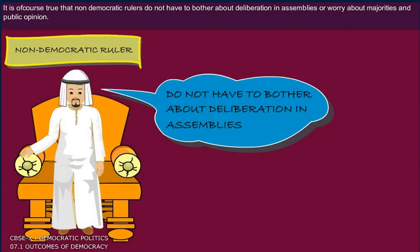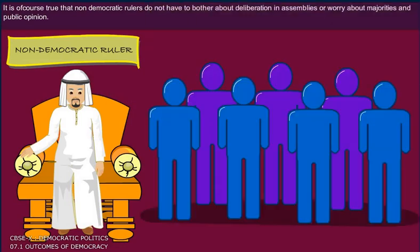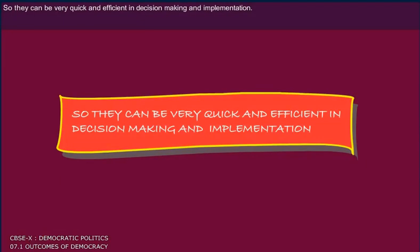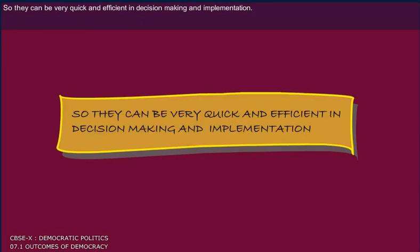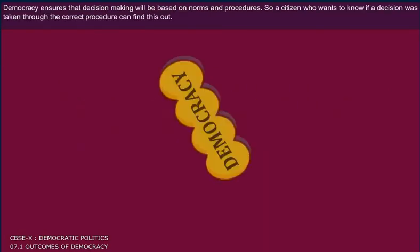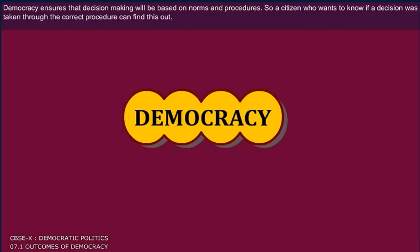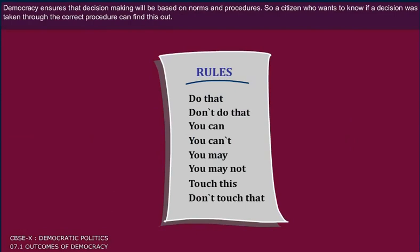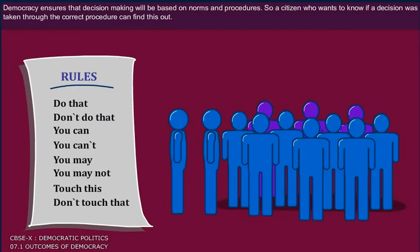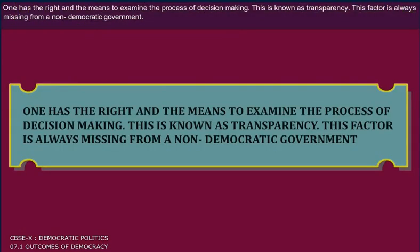It is of course true that non-democratic rulers do not have to bother about deliberation in assemblies or worry about majorities in public opinion. So they can be very quick and efficient in decision making and implementation. Democracy ensures that decision making will be based on norms and procedures, so a citizen who wants to know if a decision was taken through the correct procedure can find this out. One has the right and the means to examine the process of decision making.